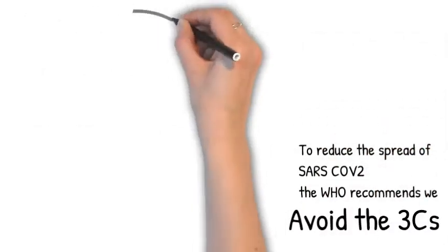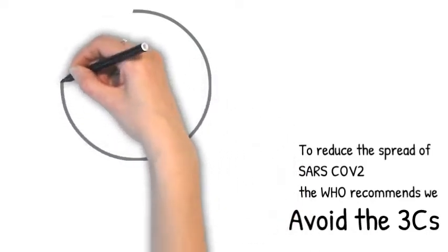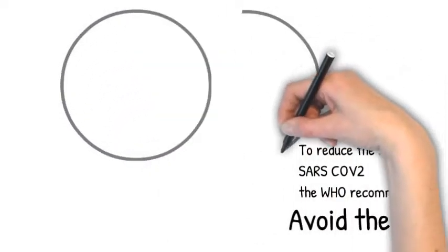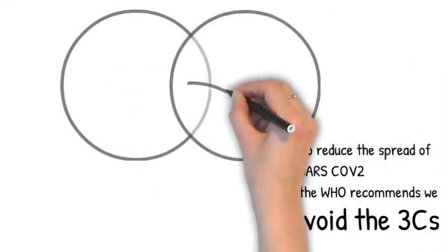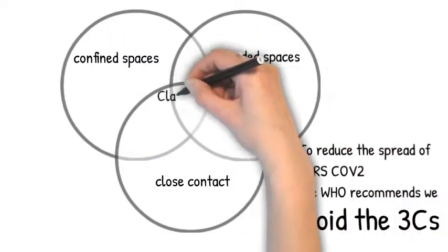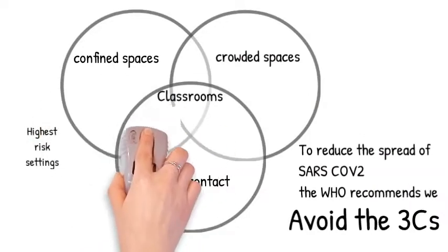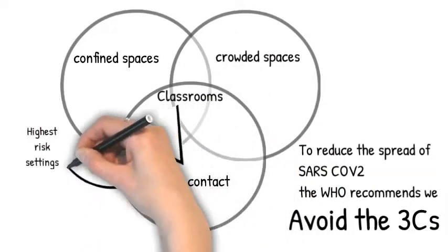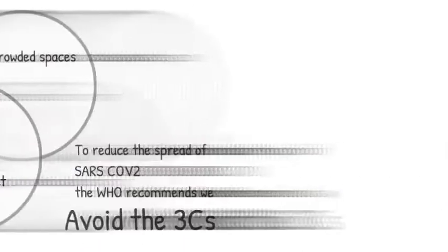To reduce the spread of SARS-CoV-2, WHO recommends that we avoid the 3 C's. What are the 3 C's? Confined spaces, close contact, and crowded spaces. Classrooms are all three and they are the highest risk settings.